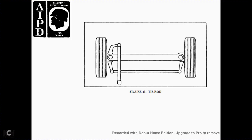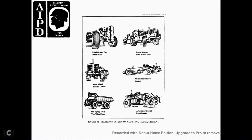Figure 41 shows the tie rod. Figure 42 shows the steering system on construction equipment, including the road grader, two-wheel steer, three-axle scraper, front wheel steer, rear wheel steer loader, the articulated steered scraper, and the off-highway track two-wheel articulated steering front loader.